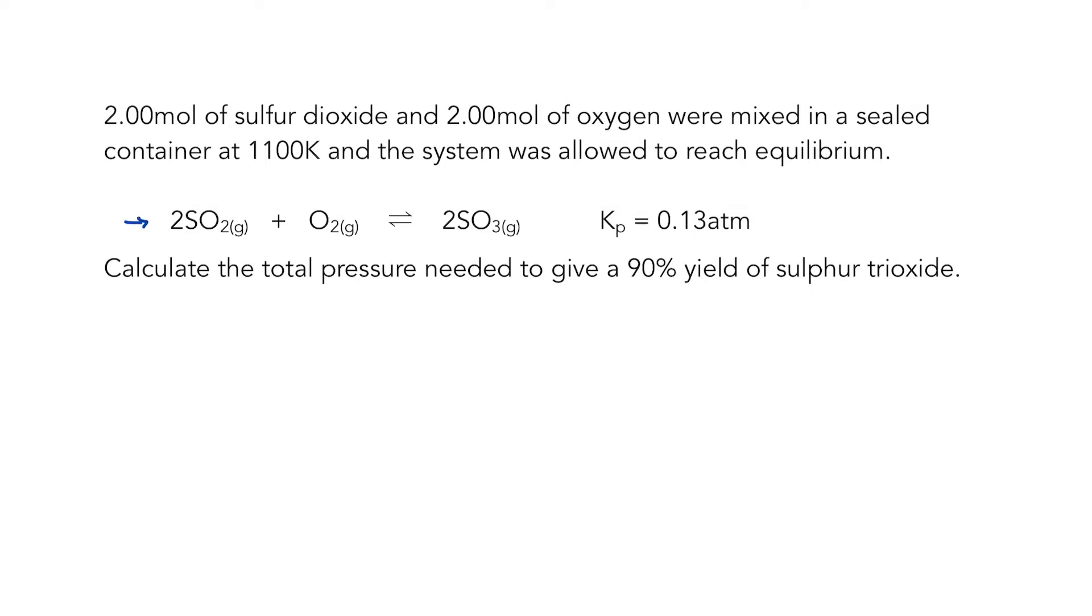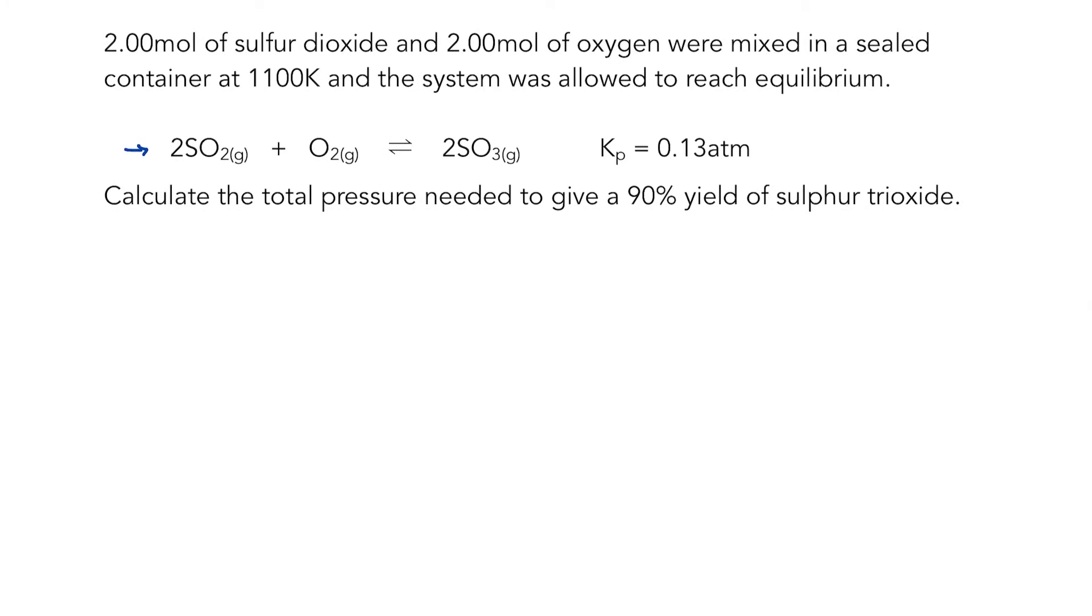Our starting point is always to write an expression for KP, because from there we can figure out what we need to work out in order to come up with an answer. So KP is equal to the partial pressure of sulphur trioxide raised to the power of two divided by partial pressure of sulphur dioxide raised to the power of two multiplied by the partial pressure of oxygen.